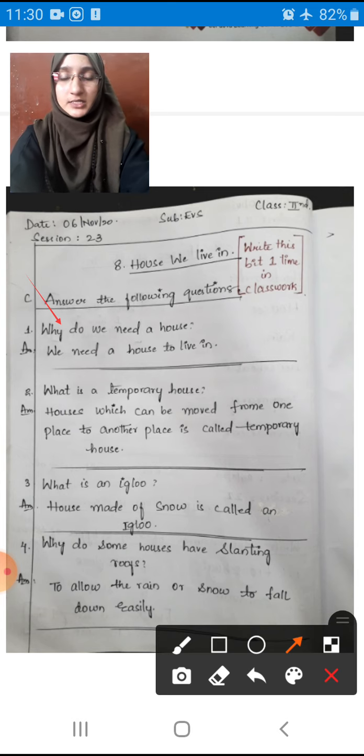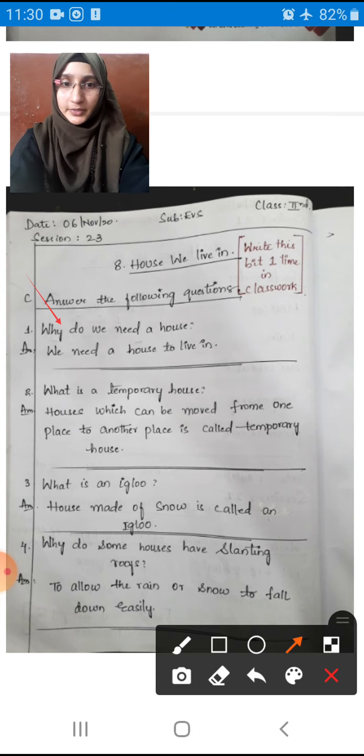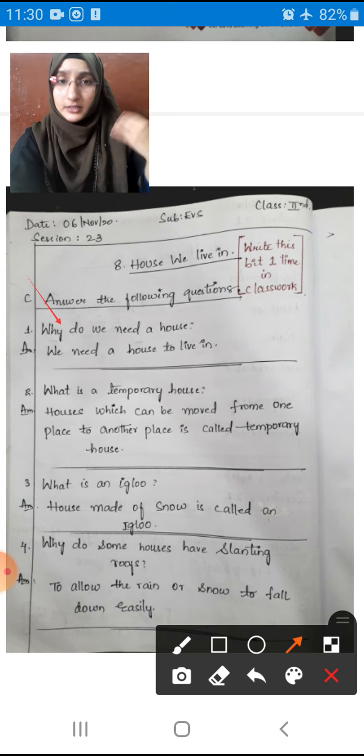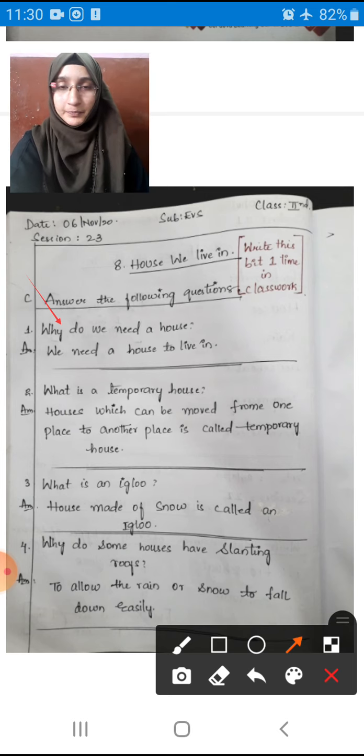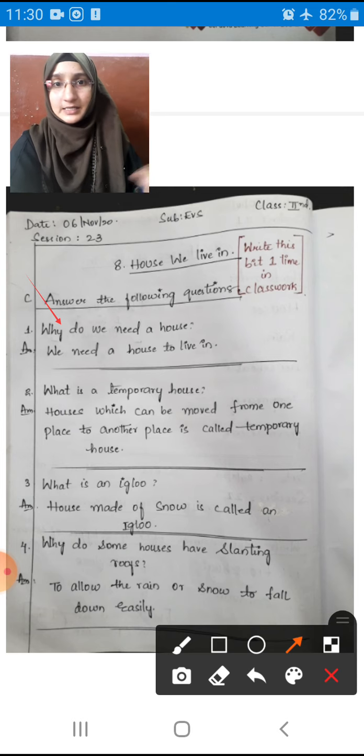What is a temporary house? Houses which can be moved from one place to another place is called temporary house. These are houses that move from one place to another, like when mountainers go camping. They come to one place, then go to another place. They are changing the places. When they move from one place to another place, that type of house is called temporary house, like tent.